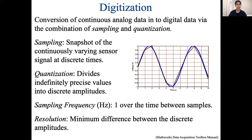Two important terms are sampling frequency and resolution. Sampling frequency is one over the time between samples — in this example each sample is one second apart, so the sampling frequency is 1 Hz. Resolution is the minimum difference between discrete amplitude values — for us that's 0.2 volts. Like with the record player, if we have a high enough resolution and sampling frequency, the digital signal becomes closer to the analog signal and our ears won't really detect much difference between the record and the CD.